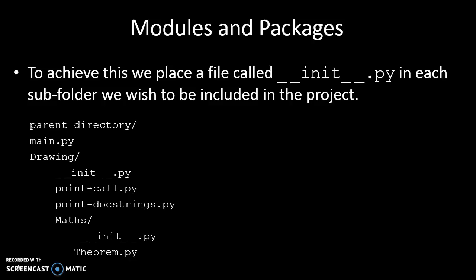Let's say we have the following structure where we have a parent directory with the main Python program in that and a folder called Drawing. Inside the Drawing folder, we have one, two, three files—Python files—and then a subfolder called Maths, and inside Maths there's two Python files. Inside each of the folders, we can see we have a special file name called __init__.py.